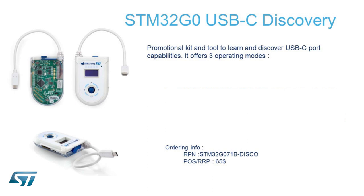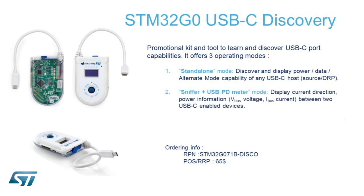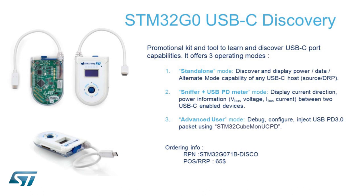Here is more information about the STM32 G0 discovery kit. This is a promotional kit you can use to learn and discover the USB-C port capabilities. It has three modes. The first is the standalone mode, where you can discover and display the power, data, and alternate modes of any USB-C host. The second mode is the sniffer and meter mode, which permits displaying the current direction and power information like VBUS and IBUS between two USB-C enabled devices. The third mode is the advanced mode, where you can debug, configure, and inject USB-PD 3.0 packets using the STM32 CubeMonitor USB-PD software.